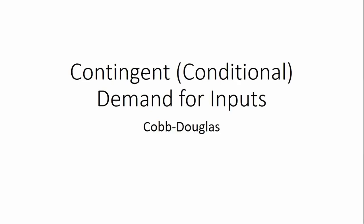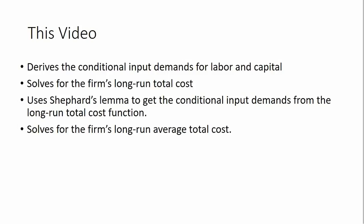In this video, we're going to derive the conditional input demands from a Cobb-Douglas production function. We're going to do numerous things here: derive the conditional input demands for labor and capital, solve for the firm's long-run total cost equation, show the use of Shephard's Lemma to get the conditional input demands from the long-run total cost function, and also solve for the firm's long-run average total cost.